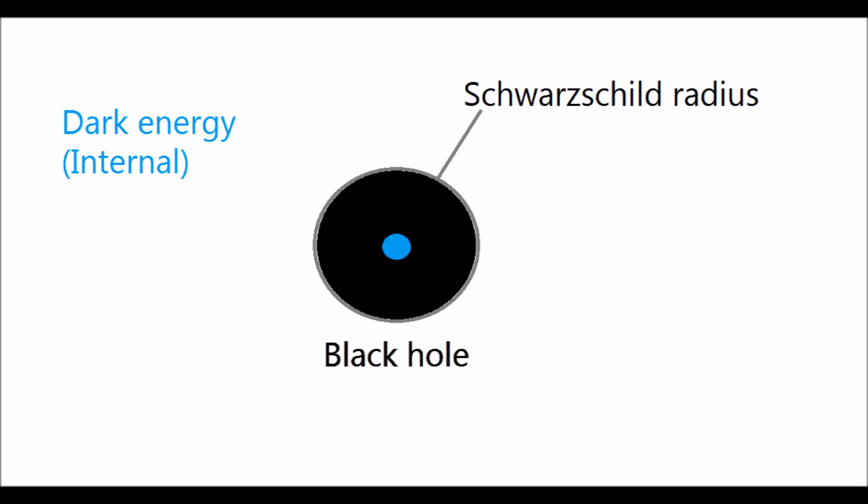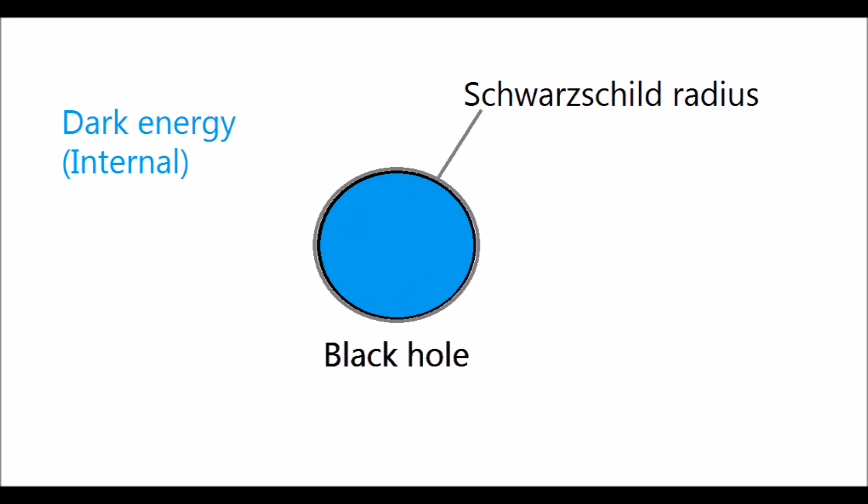Within the universe emerges dark energy, which forces the black hole outward. Eventually, dark energy forces the black hole to its Schwarzschild radius. The pressure placed upon all locations will make the surface homogeneous and isotropic.